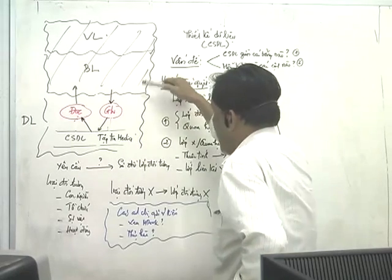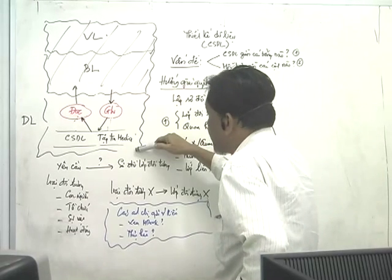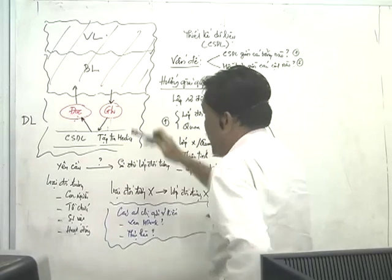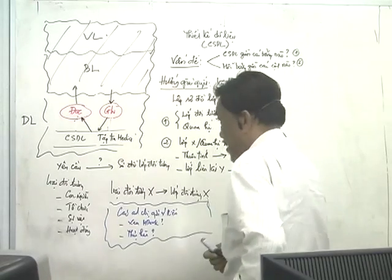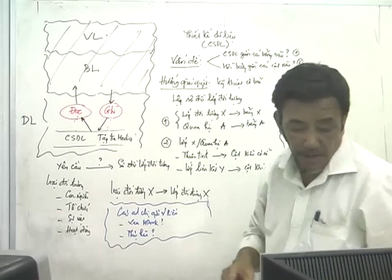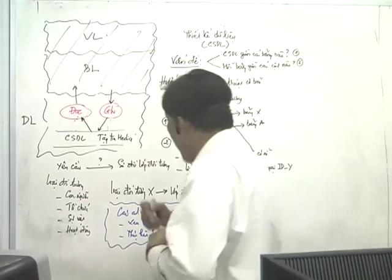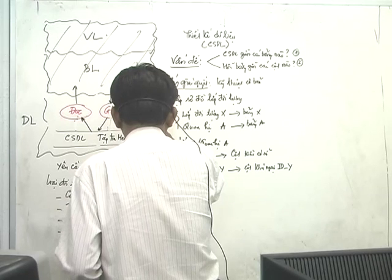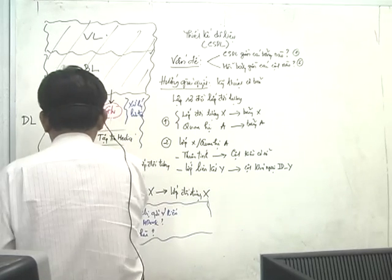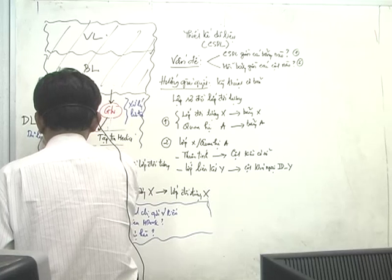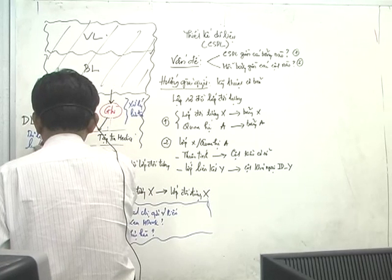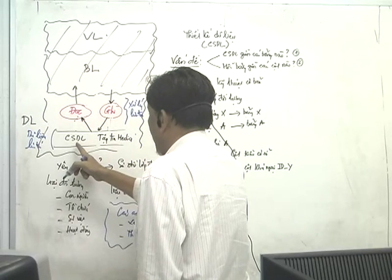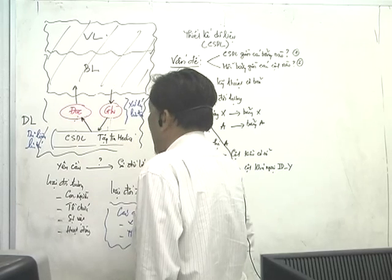Chúng ta đang học về thành phần lưu trữ là DL. Còn BL và VL thì chúng ta cũng đã biết tới rồi, nhưng tạm thời xem nó đơn giản nhất có thể. Trong thành phần lưu trữ này, nó chia thành 2 thành phần con: thành phần xử lý lưu trữ và thành phần dữ liệu lưu trữ. Trong xử lý lưu trữ có xử lý đọc và xử lý ghi. Trong dữ liệu lưu trữ có dữ liệu có cấu trúc là cơ sở dữ liệu, và dữ liệu phi cấu trúc là những tập tin media.